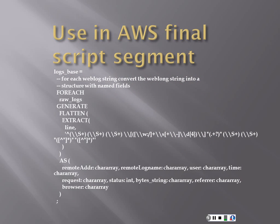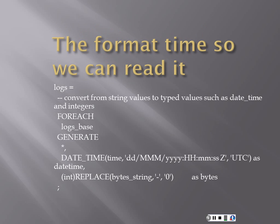This is the final script segment just for converting the logs. Then for each item, we want to convert string values to type values such as date, time, and integer. For each log entry, we generate the datetime and put it into a format as time, date, month, year, hour, minute, second. Then we take it as universal coordinated time — it's all going to convert over to GMT.